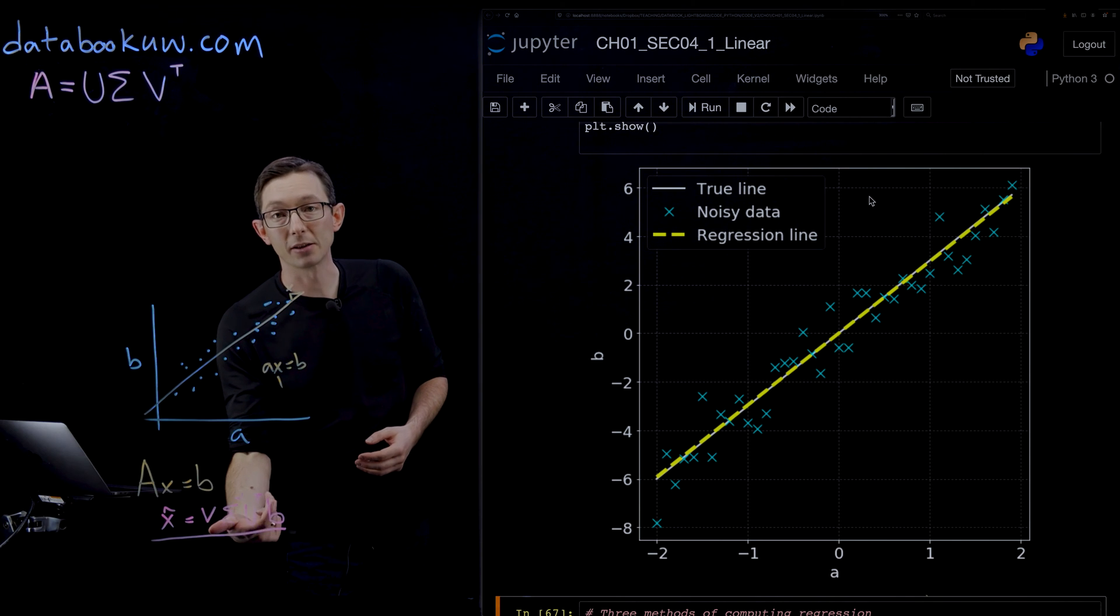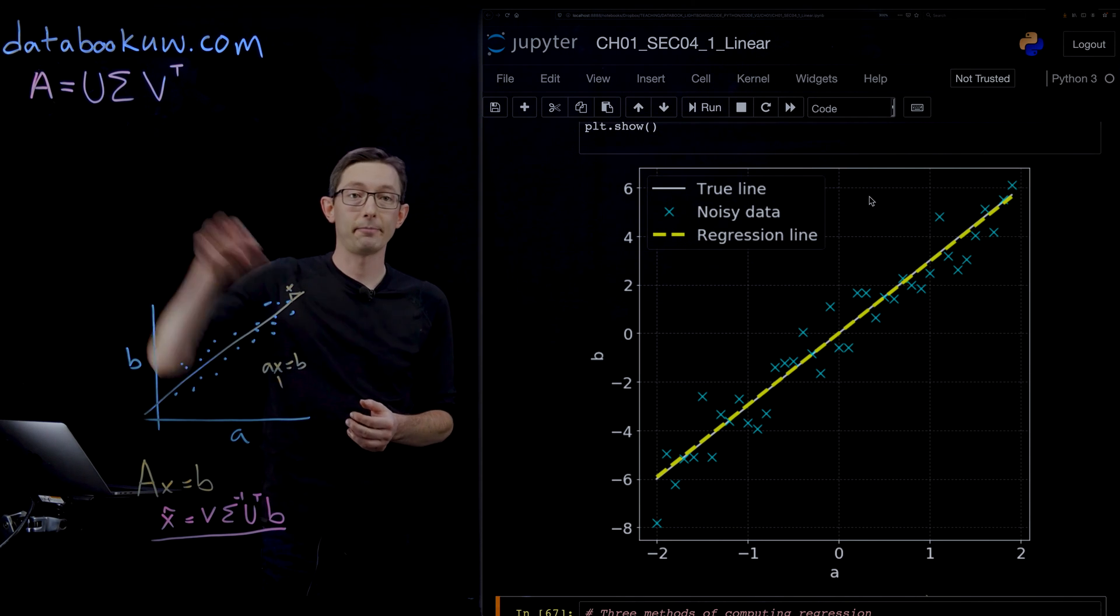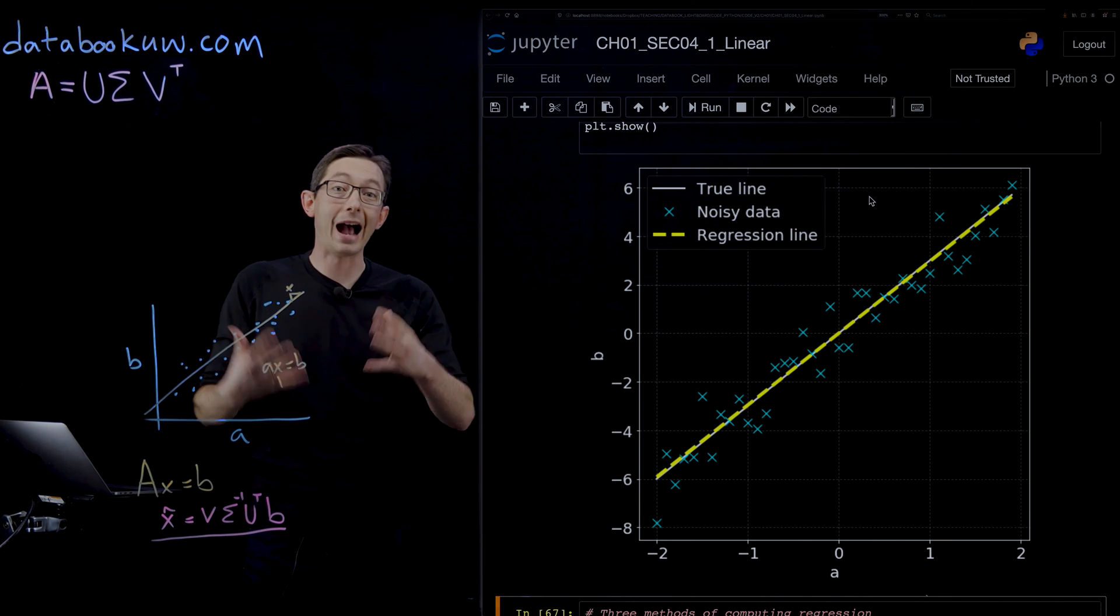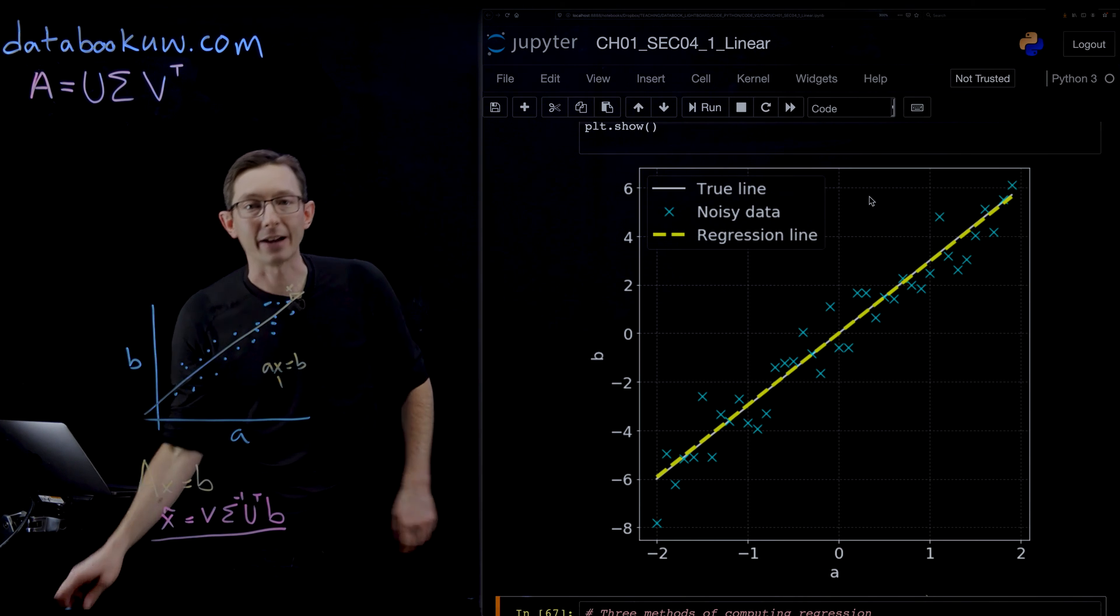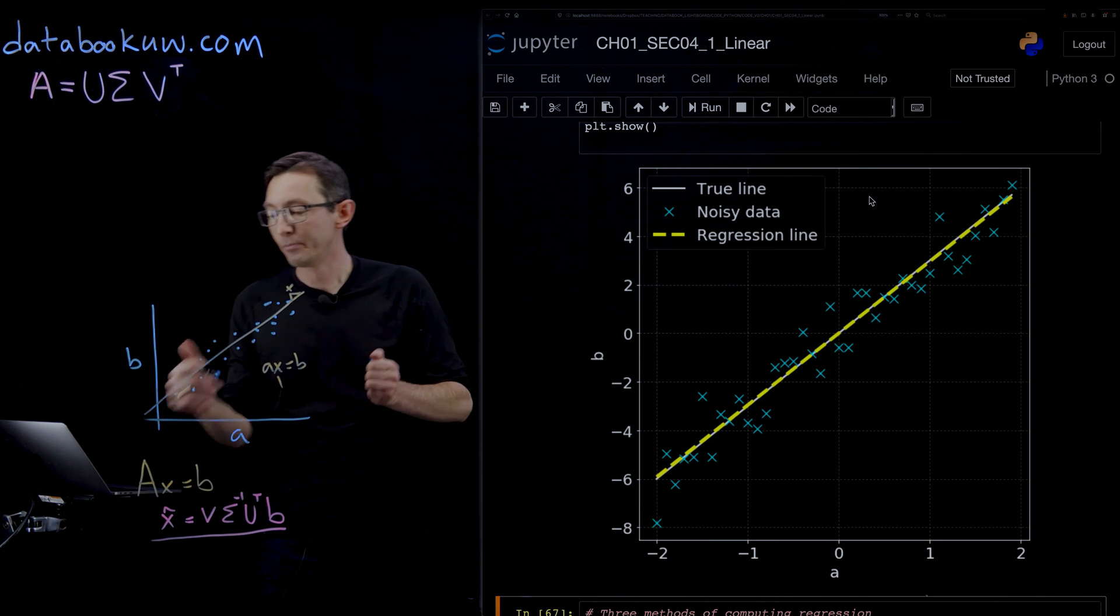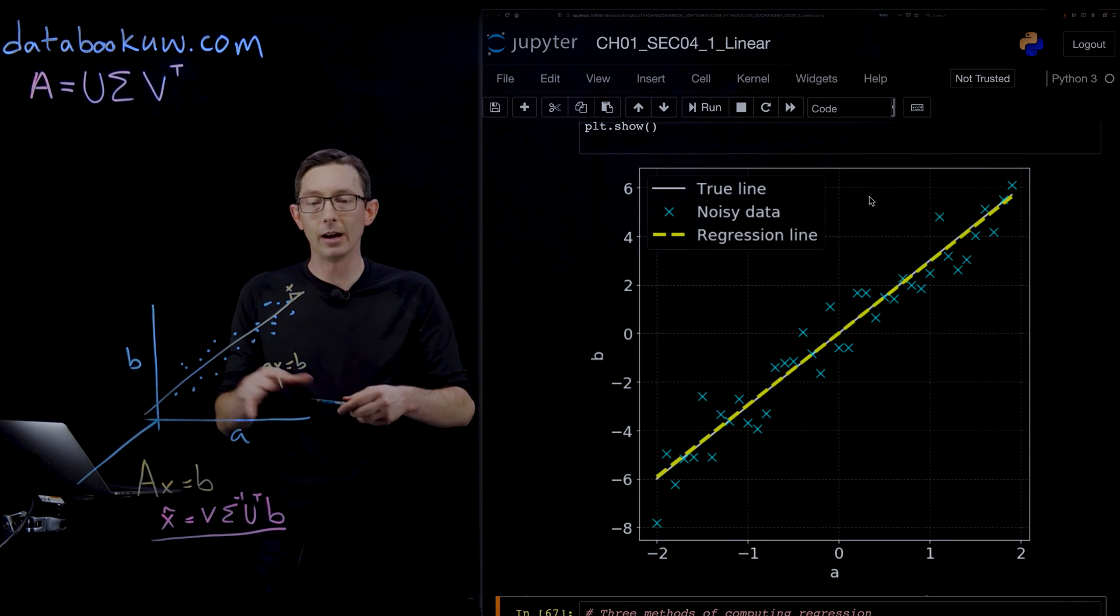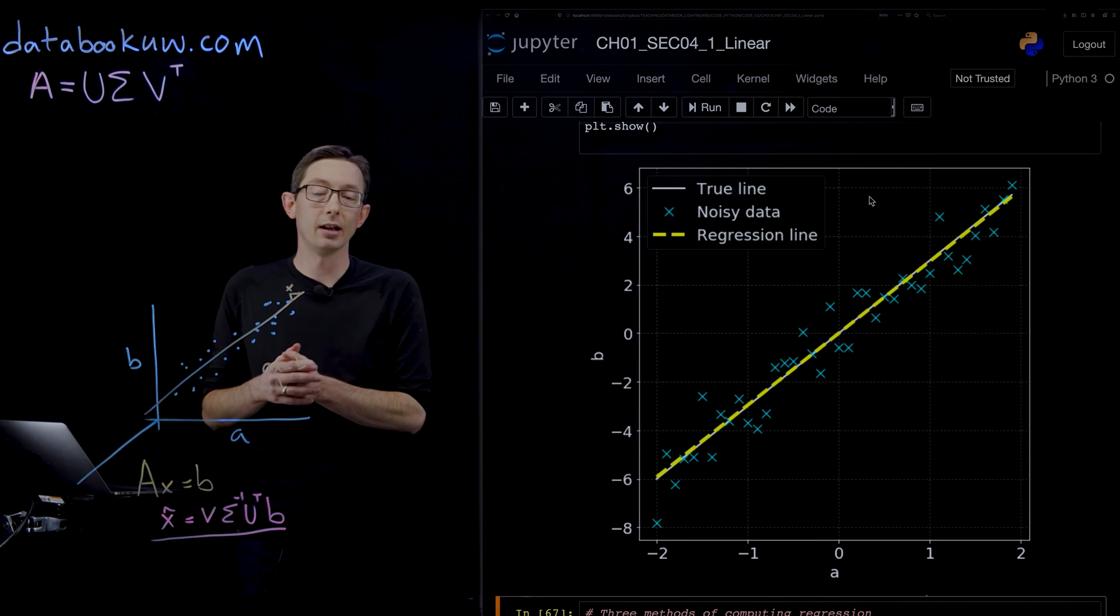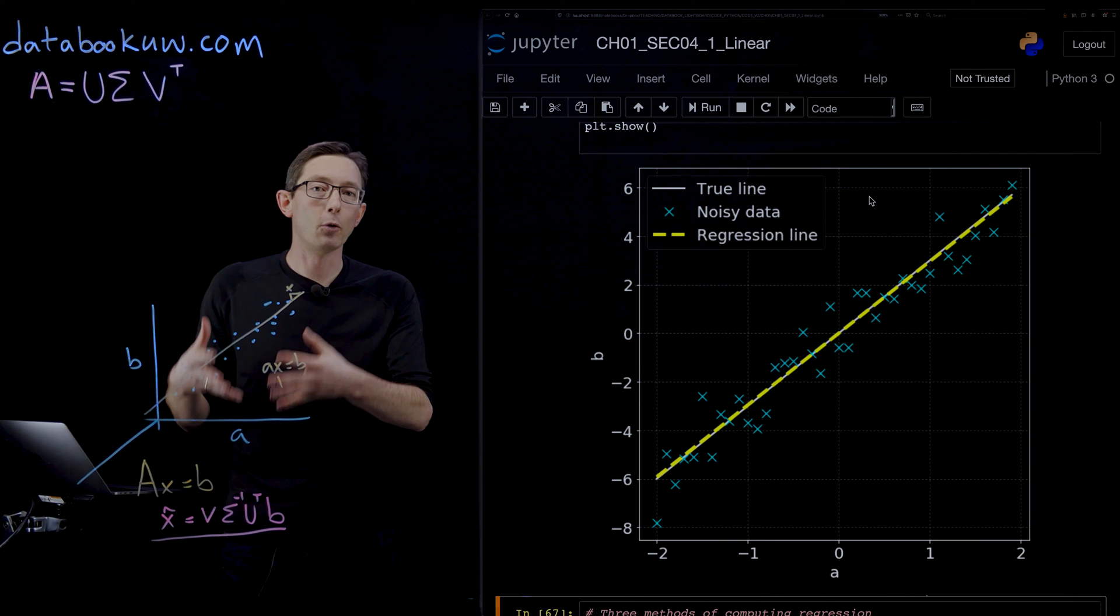Using the least squares best fits from the pseudo inverse of the A matrix. Now what we're going to show you is how you can do this for higher dimensional data sets where instead of just having a single factor A that's the input to your model, you might have multiple factors A1, A2, A3 that could all be used to build a prediction of your outcome variable B.